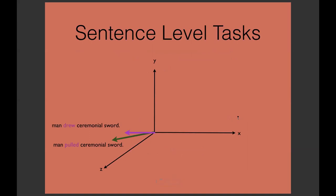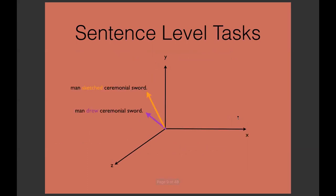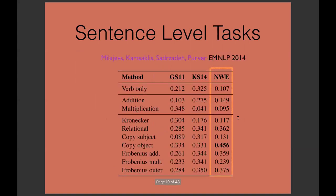In DisCoCat we've extended these types of tasks to the sentence level. Here's a disambiguation task: a man drew a ceremonial sword might mean that a man pulled the ceremonial sword or that a man sketched the ceremonial sword. If you build vectors for these sentences and calculate the cosine of the angle between them, you can guess which meaning the ambiguous verb 'draw' has. We can always find a tensor model, like you see here in boldface, that outperforms all the other models and comes very close to inter-annotator agreement.